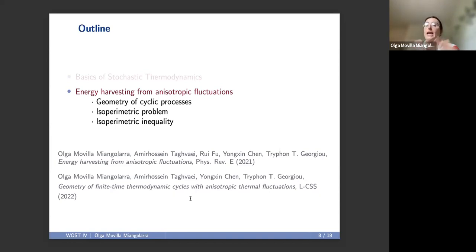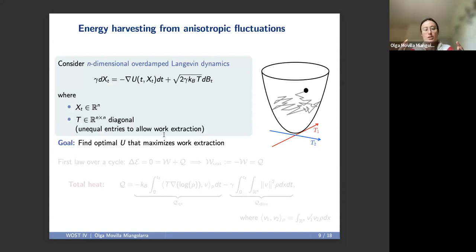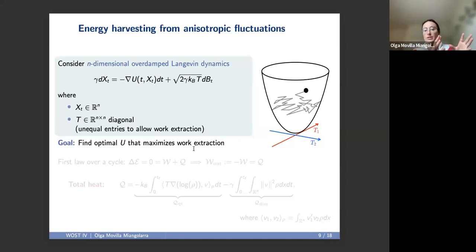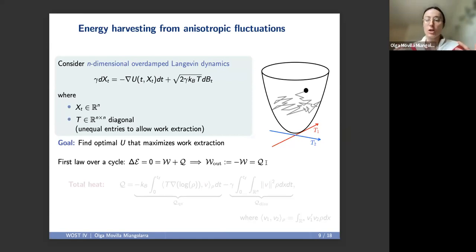In the second part of my talk, let me consider an n-dimensional system where each degree of freedom is subjected to a different temperature — the setting of anisotropic fluctuations. I'll have the same overdamped Langevin dynamics, but now x lives in R^n and T is an n×n diagonal matrix with unequal entries for anisotropic fluctuations. My goal is to find the optimal control u that maximizes work extraction while driving the system over a cycle. Because we go over a cycle, we start and end at the same state, so the energy over a cycle doesn't change. By the first law, the work output — minus the work due to sign convention — equals the heat. So it is more convenient to focus on quantifying the total heat over a cycle.